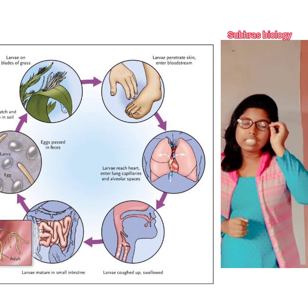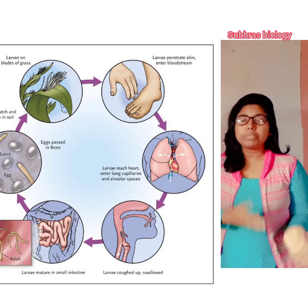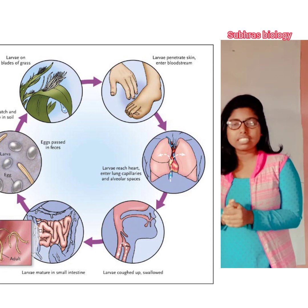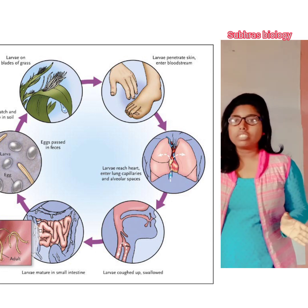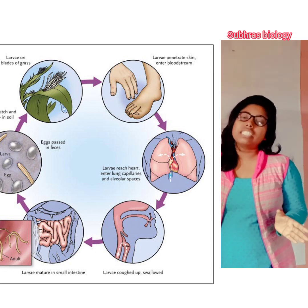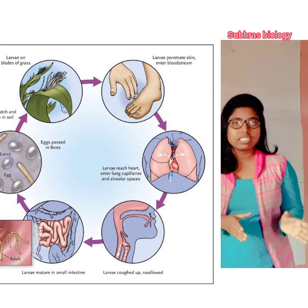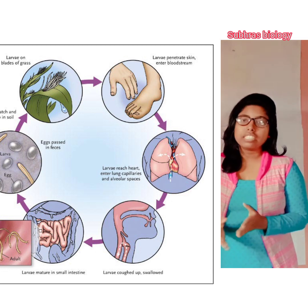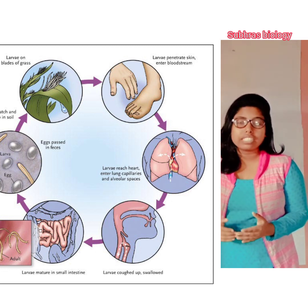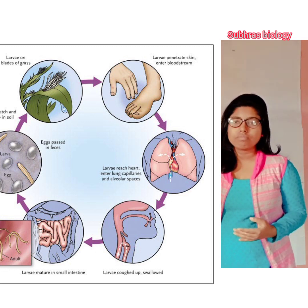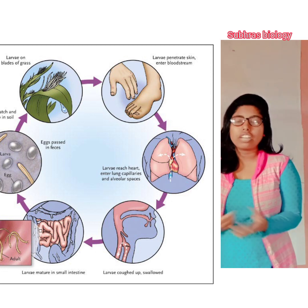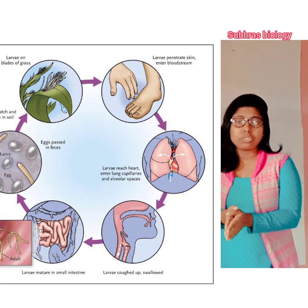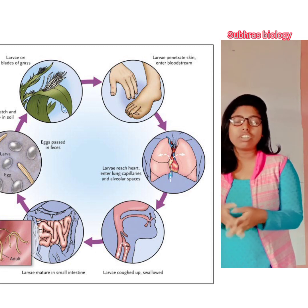They mature, reproduce, and lay eggs. These eggs are finally passed out in fecal matter and move outside into the soil, repeating the cycle. When people defecate outdoors, the eggs reach the soil and the soil becomes infected again.